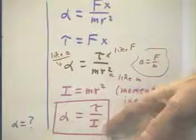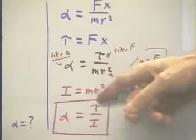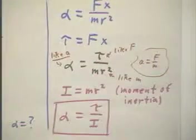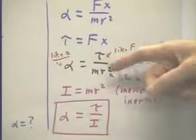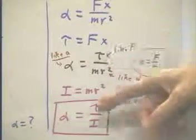This moment of inertia, this sum of all the mr squareds in an object, is analogous to mass. Torque is analogous to force, and angular acceleration is analogous to acceleration.